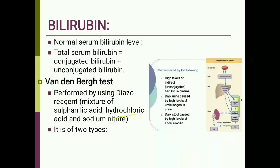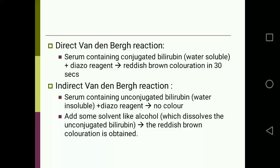Normal serum bilirubin level is about 0.5 milligrams per deciliter, ranging from 0.2 to 0.8 milligrams per deciliter. Total serum bilirubin includes both conjugated and unconjugated bilirubin. These can be differentiated using Van den Berg's test, which is performed using diazo reagent — a mixture of sulfanilic acid, hydrochloric acid, and sodium nitrite.